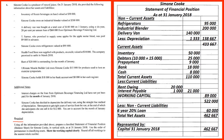Show the working capital clearly and round all workings to the nearest whole number. Simone Cook is a producer of natural juices. On 31st January 2018 she provided the following information about her assets and liabilities. Once we know that a balance sheet is required, as we go through these items we should write out what they are.